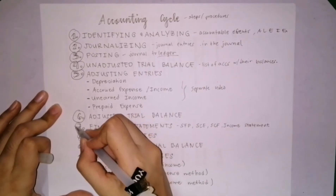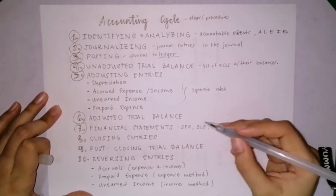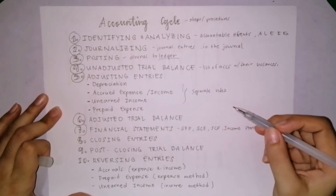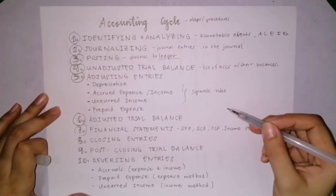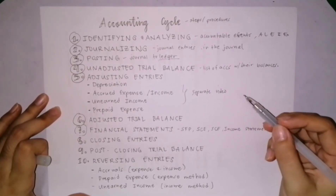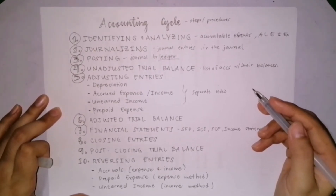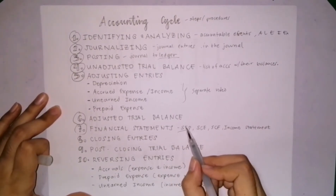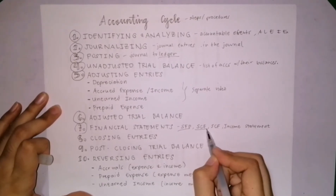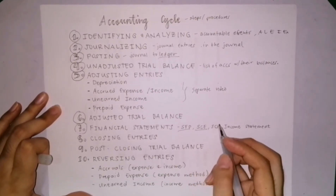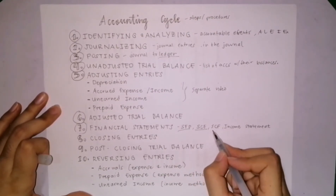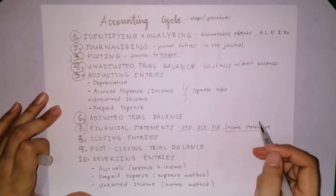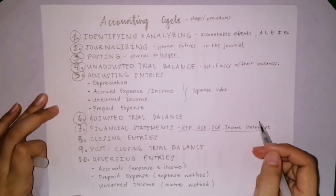Next is the preparation of financial statements. These are reports communicated to users. Financial statements are the end products of the accounting process. We have the statement of financial position, statement of changes in equity, statement of cash flows, and the income statement or statement of comprehensive income.